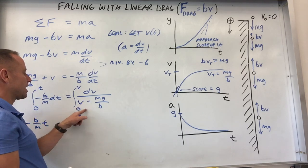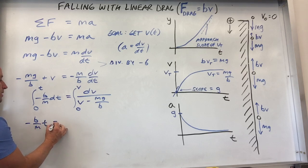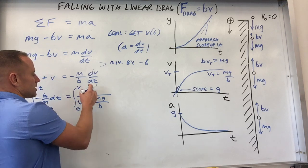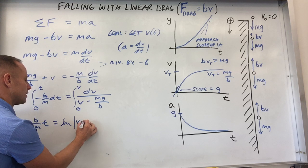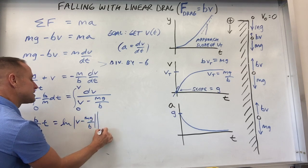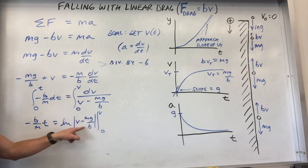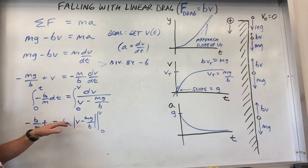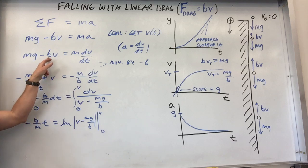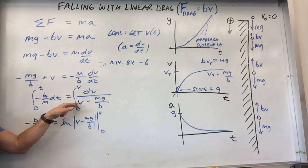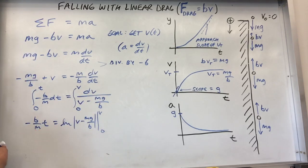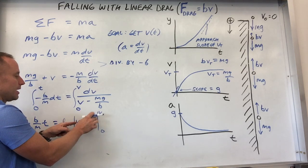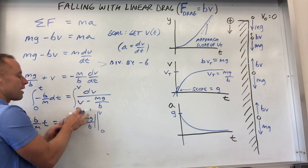And then over here you'll get minus b over m dt. So we've successfully separated it, because you don't have a mixture of V's and t's on either side. They're separated. So we're good to go to integrate it. So what you do is we're going to integrate it. We'll go from where we start our stopwatch to some arbitrary time where we stop it. And here we'll go from however fast we start the thing dropping. So if we had thrown it down initially, you would actually put an initial velocity here. But we're just starting it at V equals 0, V initial equals 0. And we'll go to some arbitrary V final.